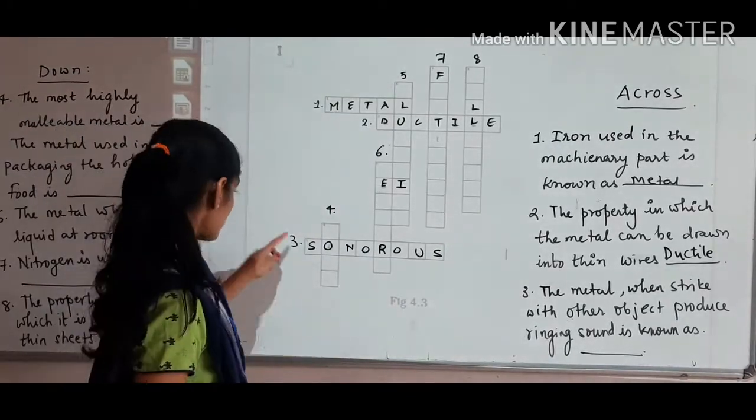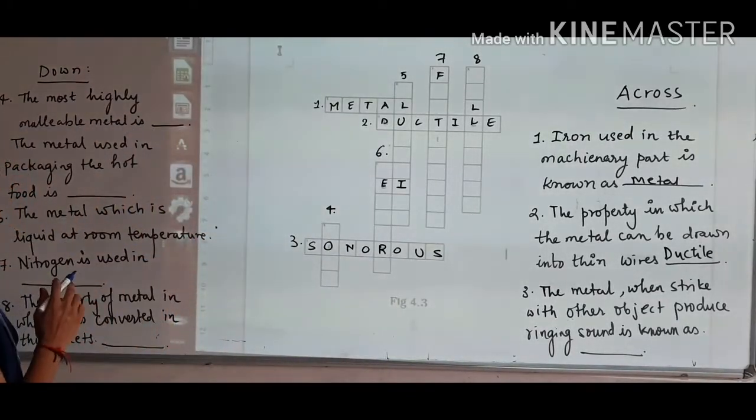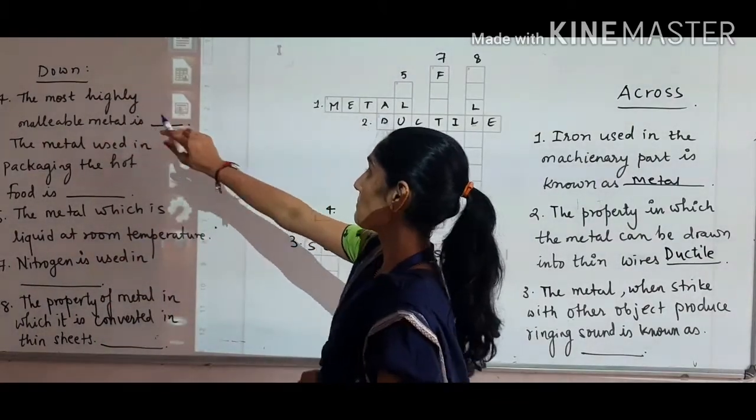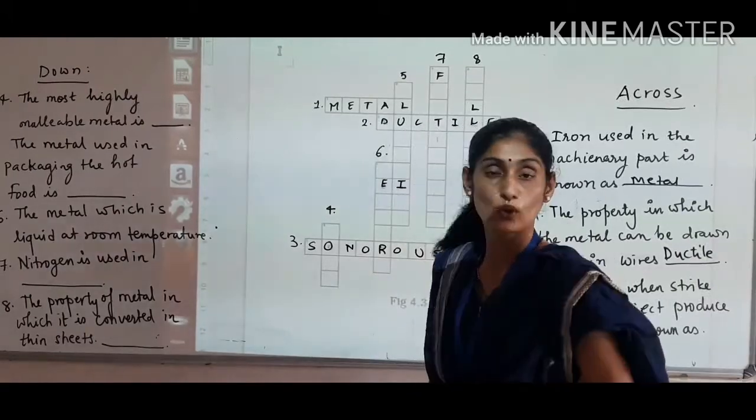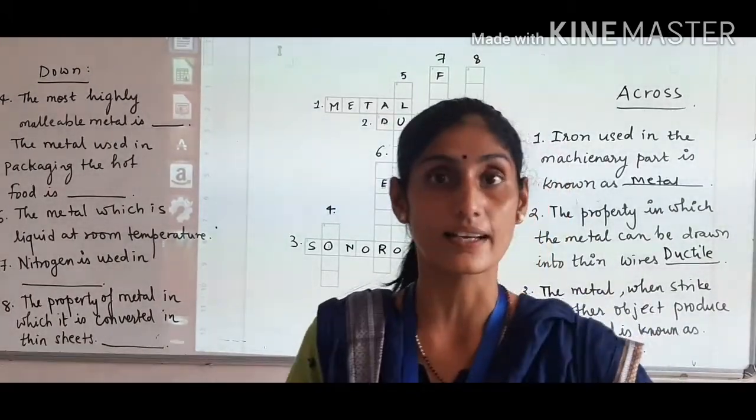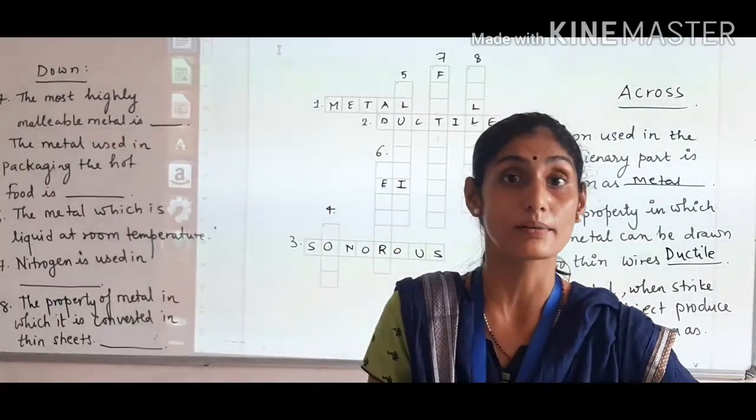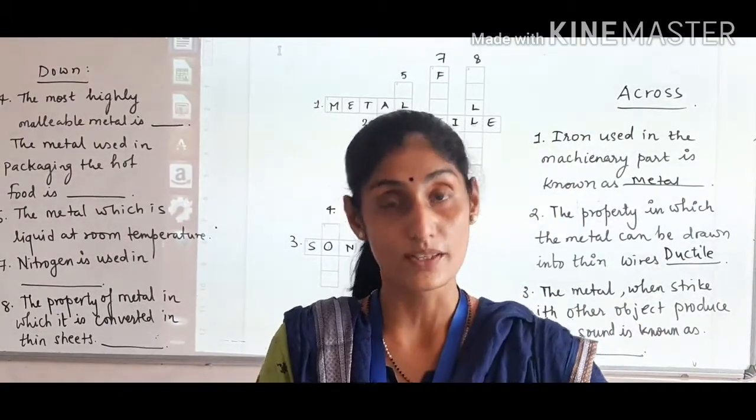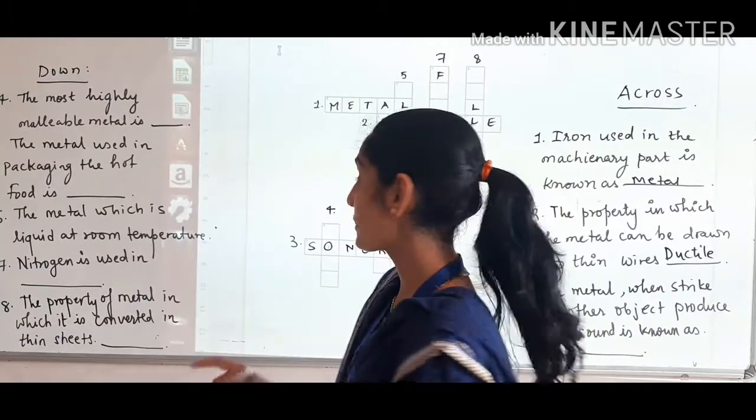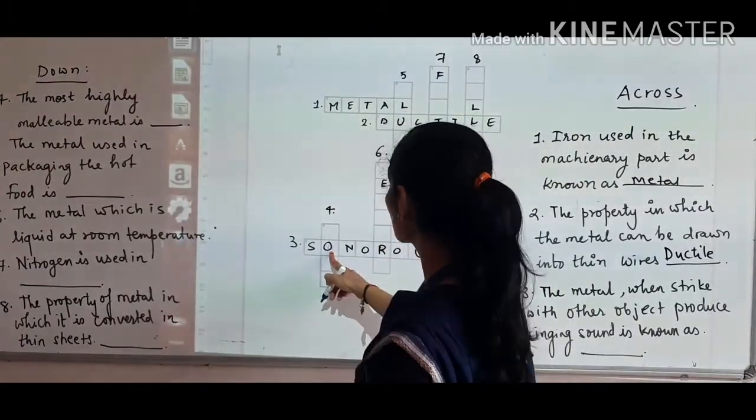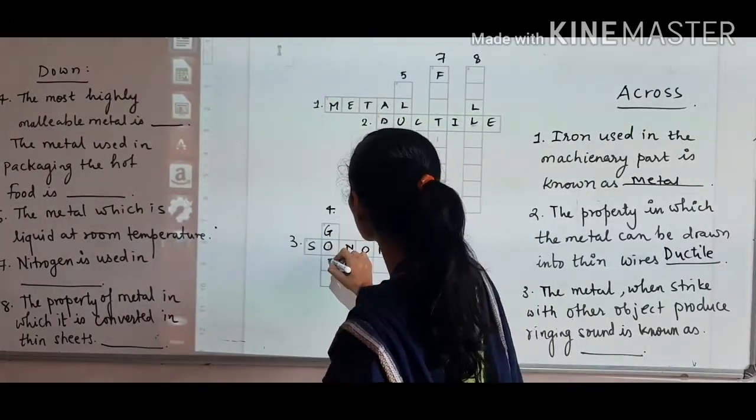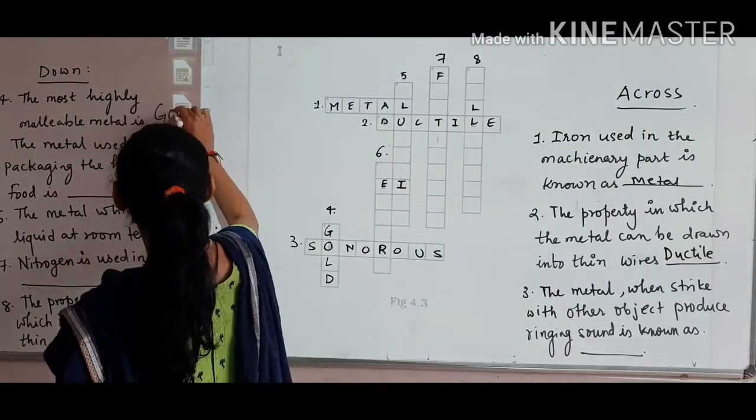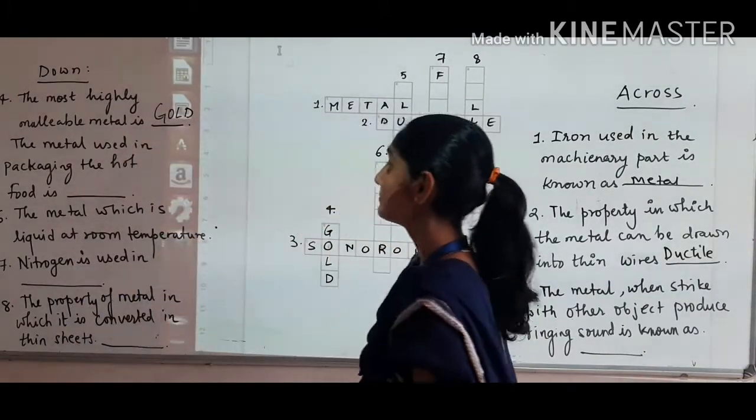Now we are moving to the downward part, down part of the clues. You can see on the left side. Gold and silver are the most malleable. It is easily converted into sheets, then copper is also converted into sheets. Gold is the most highly malleable metal.